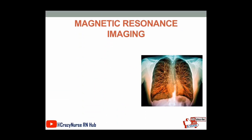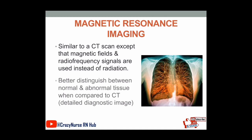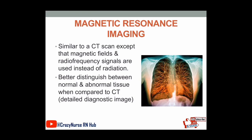Magnetic resonance imaging is similar to a CT scan except that magnetic fields and radio frequency signals are used instead of radiation. It better distinguishes between normal and abnormal tissue when compared to CT scan, providing a more detailed diagnostic image of the respiratory system.